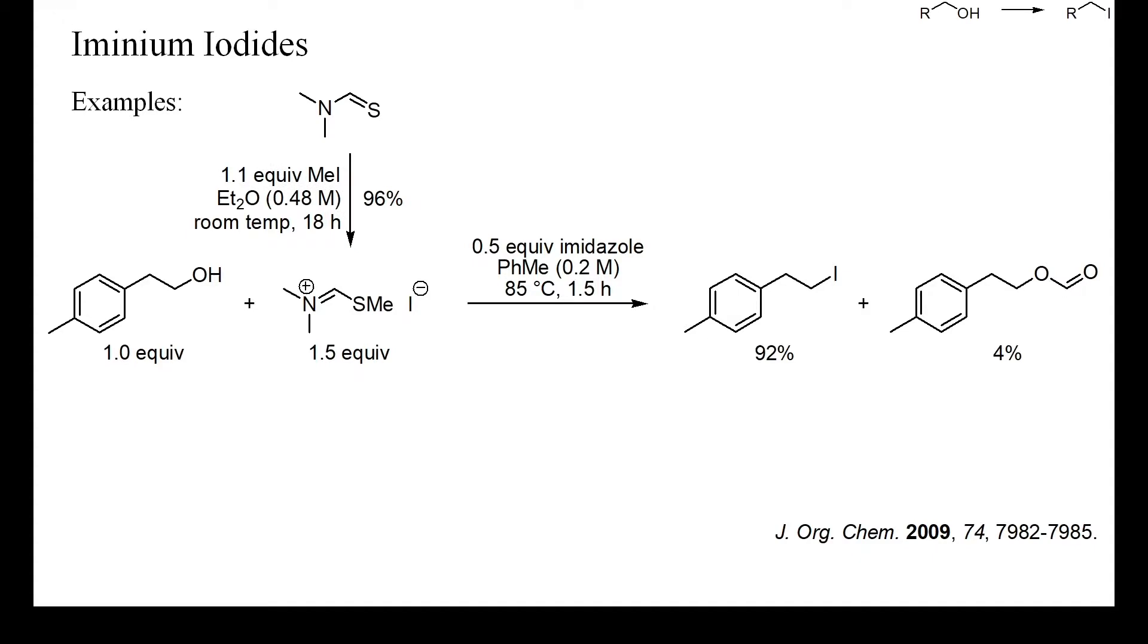The required iminium iodide was prepared by electrophilic methylation of thioformamide with methyl iodide. This reaction is likely to proceed by initial formation of an alkoxy-iminium iodide, which undergoes nucleophilic substitution with iodide. The formate must be formed by hydrolysis of the intermediate iminium salt by traces of water.